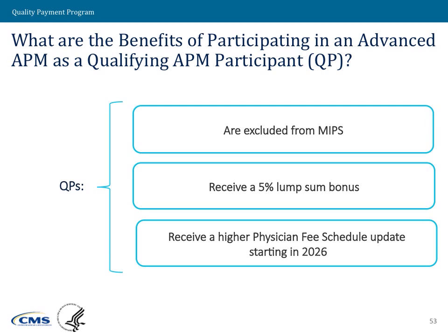This is a more explicit layout of the rewards on the advanced APM track of the Quality Payment Program. For participating in an advanced APM, we will identify those participating clinicians as qualifying APM participants, or QPs. These QPs receive specific rewards for being in advanced APMs, in addition to what the APM itself offers. First, qualifying APM participants are excluded from MIPS, so they won't have to do any of the reporting requirements or receive any of those payment adjustments associated with MIPS.